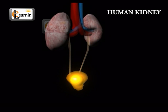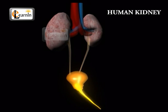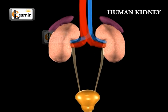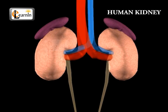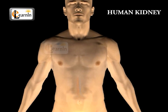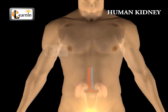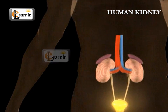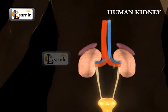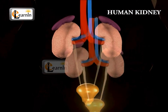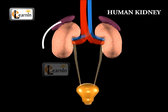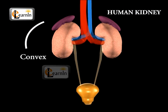The nitrogenous end product in a man is urea. The kidney is a bean-shaped, red-colored organ. Kidneys are attached to the dorsal body wall on either side of the vertebral column in the abdominal cavity. Its outer margin is convex and its inner margin is concave.